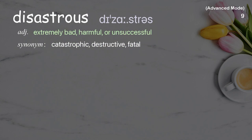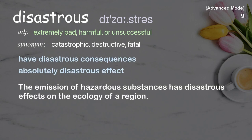Disastrous: Extremely bad, harmful, or unsuccessful. Examples: Have disastrous consequences. Absolutely disastrous effect. The emission of hazardous substances has disastrous effects on the ecology of a region.